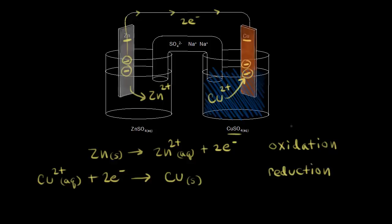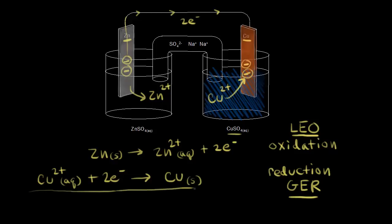Remember: loss of electrons is oxidation, and gain of electrons is reduction — Leo the lion goes ger. That's a good mnemonic. If we add together our two half reactions, we get our overall redox reaction. The two electrons lost by zinc are the same electrons gained by Cu²⁺, so we can cancel them out.